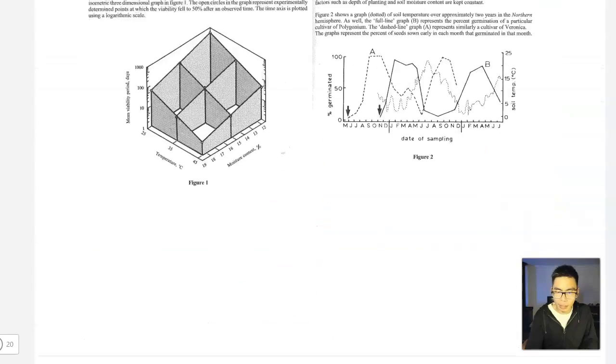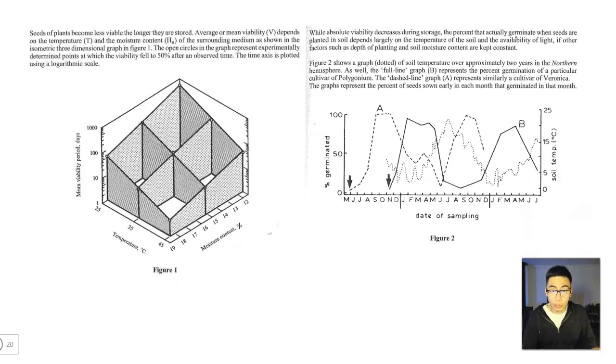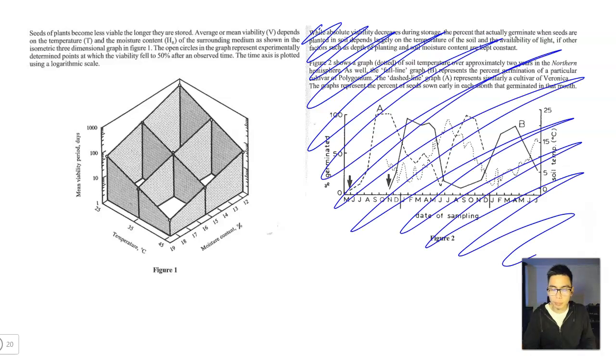So going back to what we had initially, for us to answer question 13, we had to completely ignore half the information that was provided. And how did we know? It was by reading the question stem and following the particular keywords once we understood what the question was. What the essence of the question was.